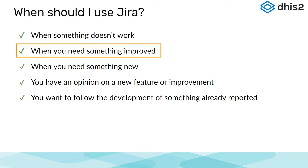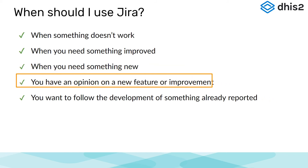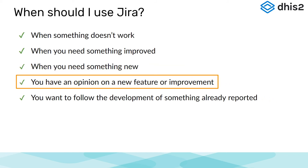JIRA is also used when the specific feature you are looking for is not yet available, or when you want to request something completely new. There could be something very specific for your needs that is not currently supported. Note that this is related to the DHIS2 platform itself and not metadata within your own customization. You can also add to any new features or improvements already reported, such as adding a related comment to a new feature already being worked on.